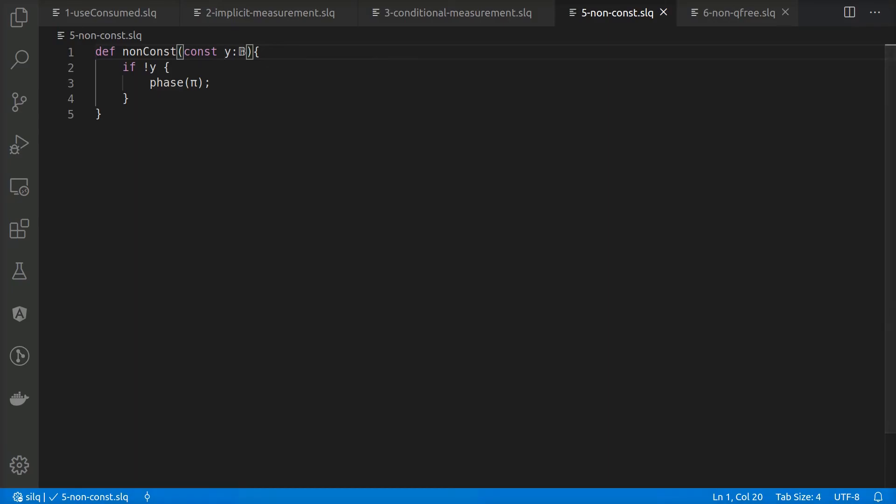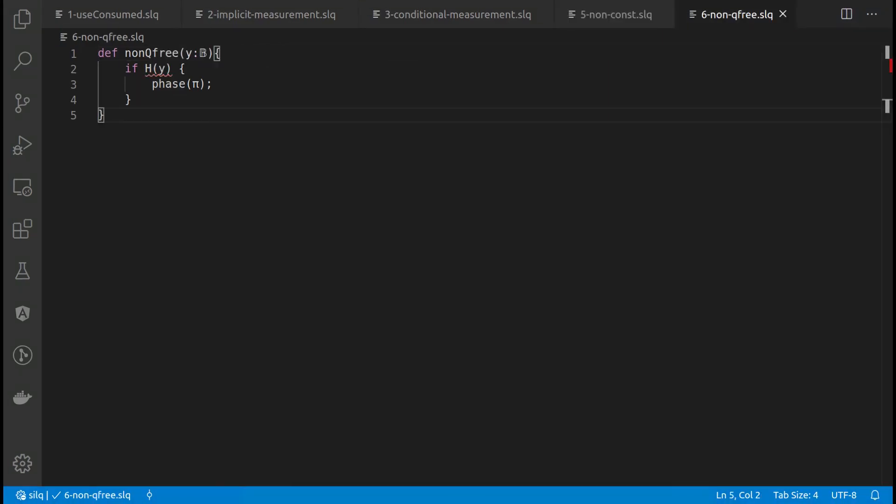We could fix this type error by replacing x by a different NOT operation that does not consume its argument, and changing the argument y to const accordingly. This last example shows a program where the condition is computed using the non-q-free function h. In this case, automatic uncomputation is impossible due to rather technical challenges we discuss in our publication.